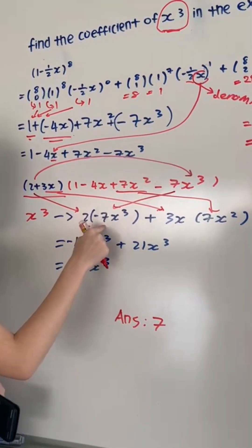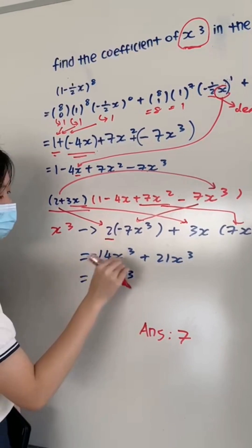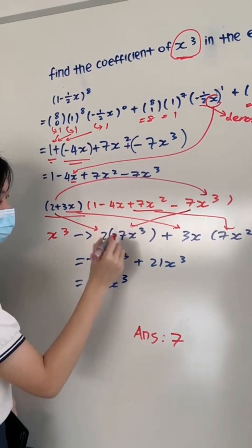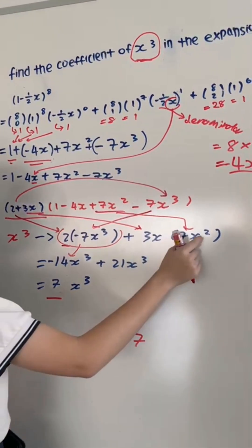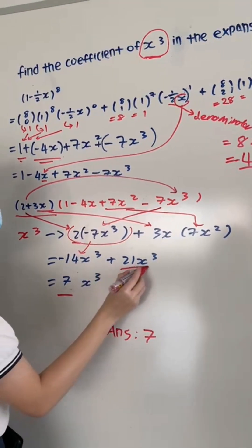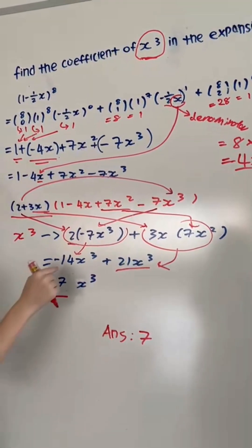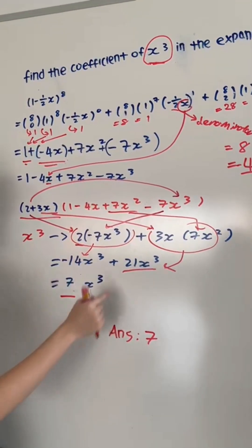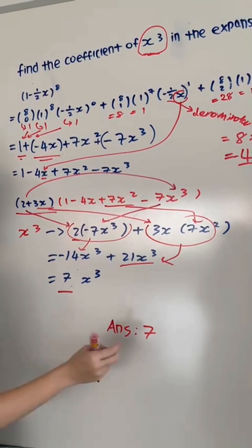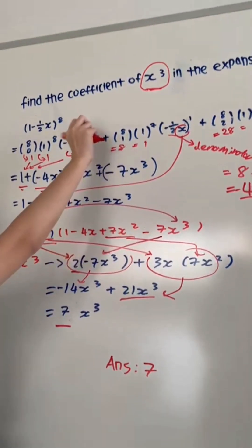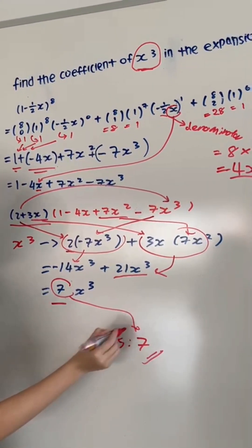2 times (-7x³) equals -14x³. Then -14x³ plus 21x³ equals 7x³. So the coefficient of x cubed is 7. Thank you.